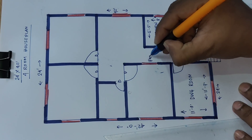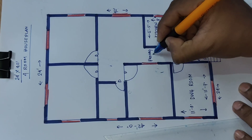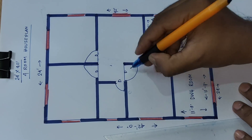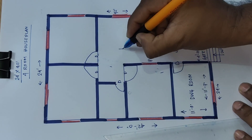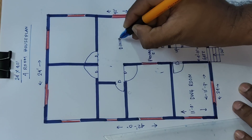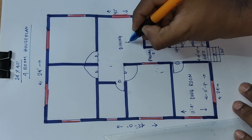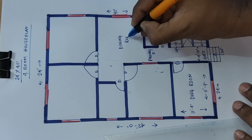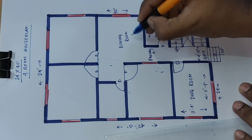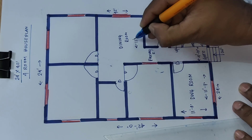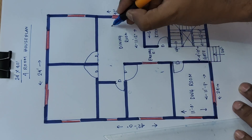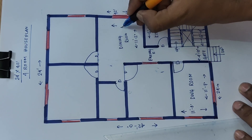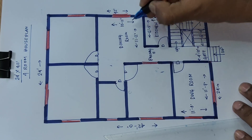This is the passage and dining room. Dining room: 11 feet 2 inch and 10 feet 11 inch. Okay.